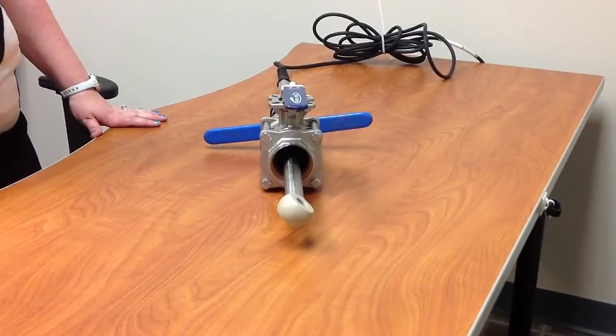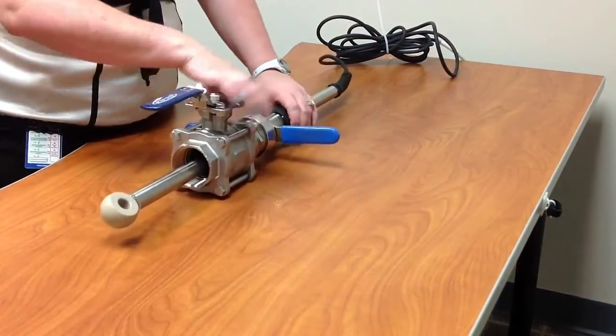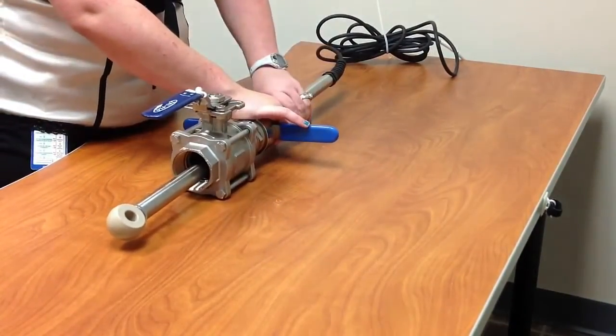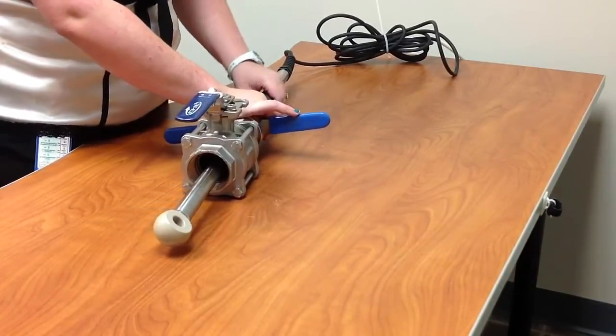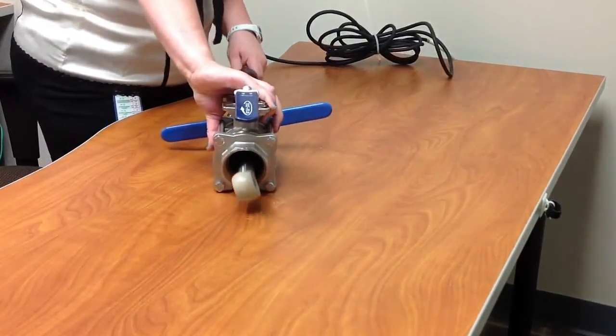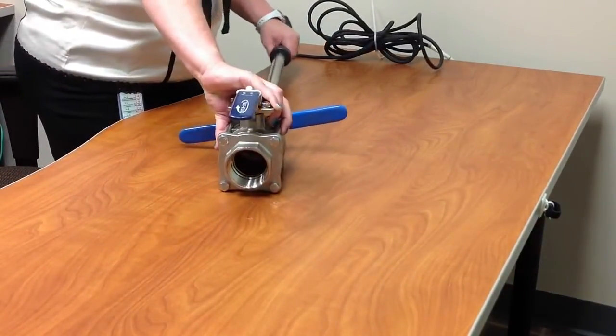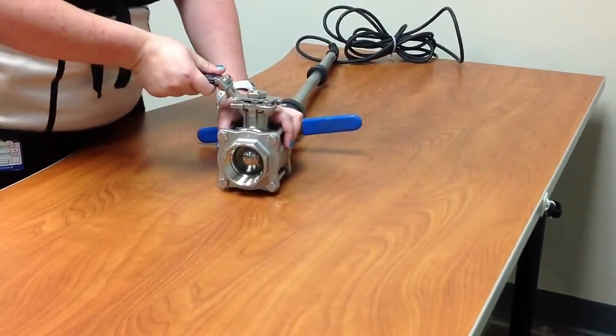Now we're going to go over the basic steps for extraction from the process. The first thing you do is the locking nut, you'll actually unloosen it so that you can pull out the PR-10 as far as you possibly can. Then you'll be able to pull the PR-10 body into the ball valve until you can't go any further. Then you're going to turn off your ball valve.